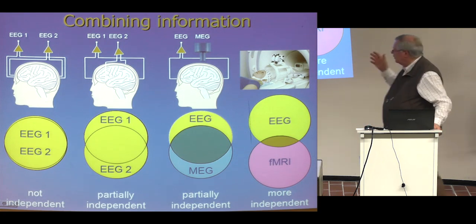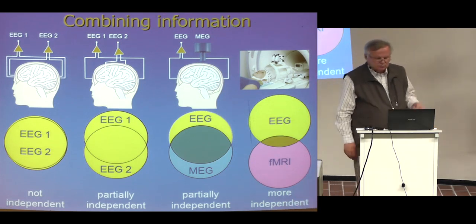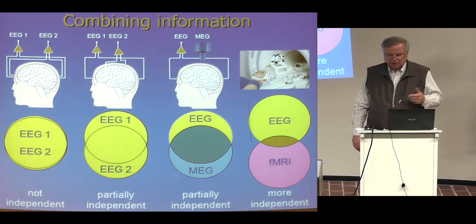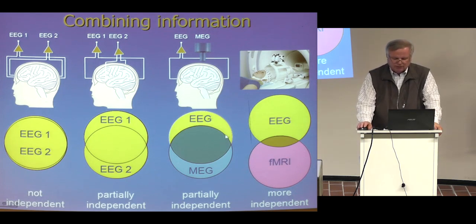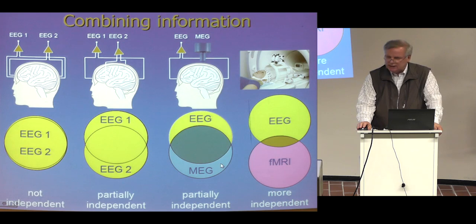So when making MEG recordings, scientists may claim they get something not possible with EEG. Usually they do not record EEG simultaneously to recognize that most of what they record with MEG is possible to obtain with EEG only. I agree there is a region of information not possible to get with EEG but possible to get with MEG — that is true. But it is only a question of how much you want to pay for it.